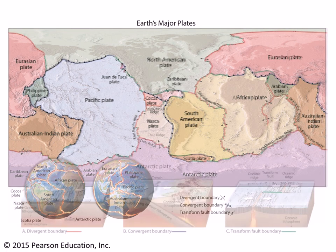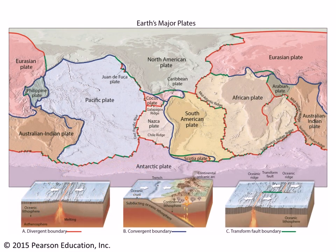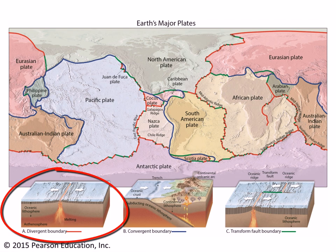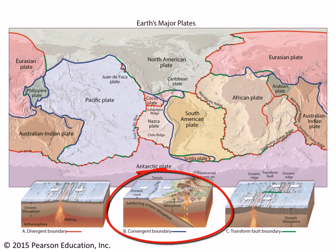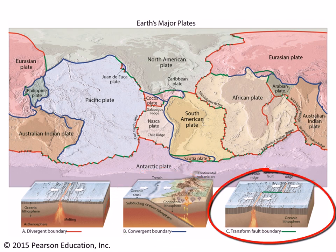The plates will have various kinds of interaction with one another. They can either be moving apart from one another — what we call a divergent boundary. They can be moving toward one another — that's called a convergent boundary. And they can be moving laterally, sideways, past each other — and that's called a transform boundary.